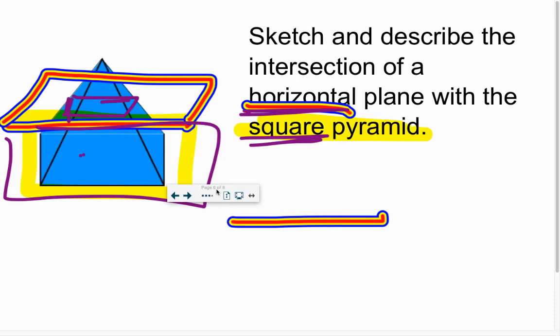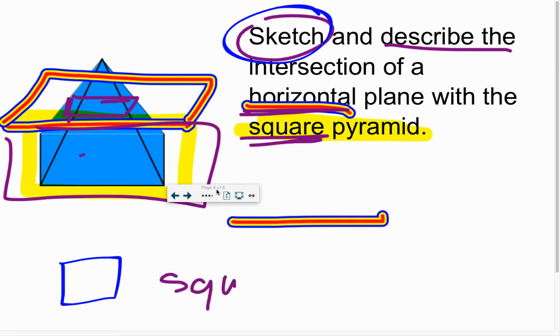So sketch, it says, all right? So since it says to sketch, I'll sketch a square, and then describe it, it is a square intersection.